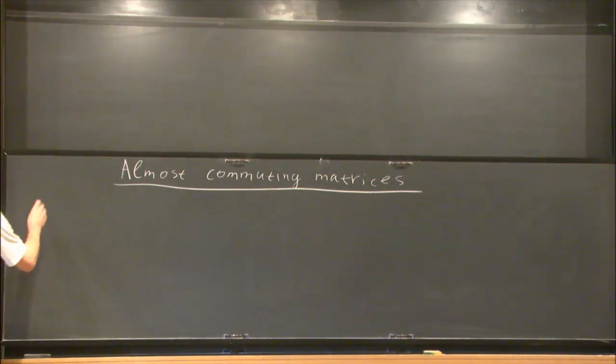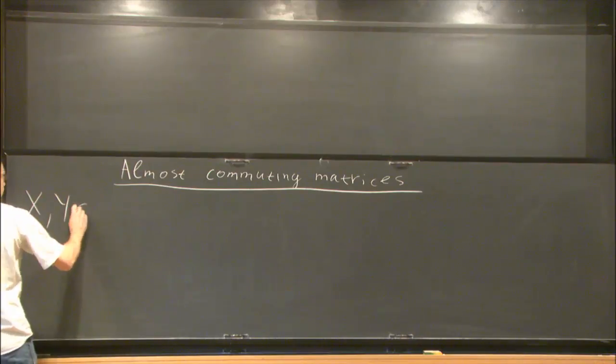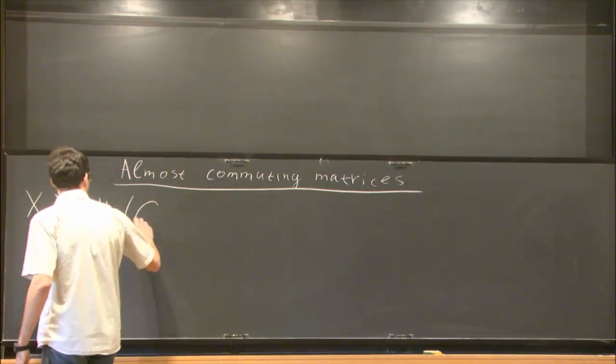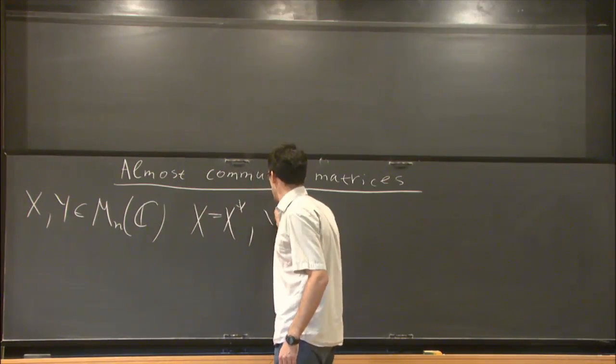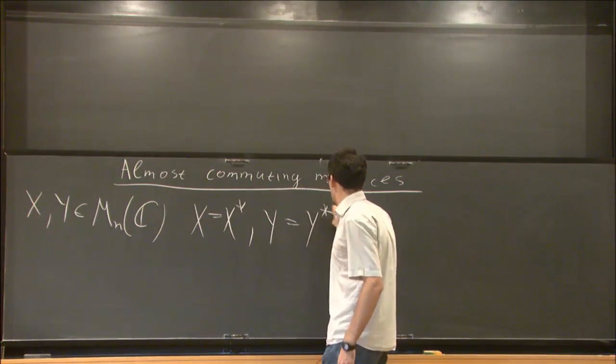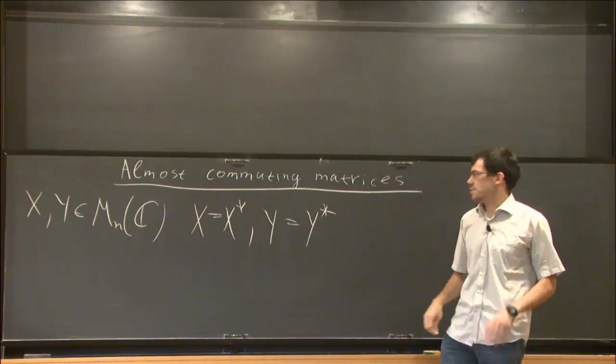Let's consider just two n by n matrices, self-adjoint, and let's also assume that their norms are bounded by one.